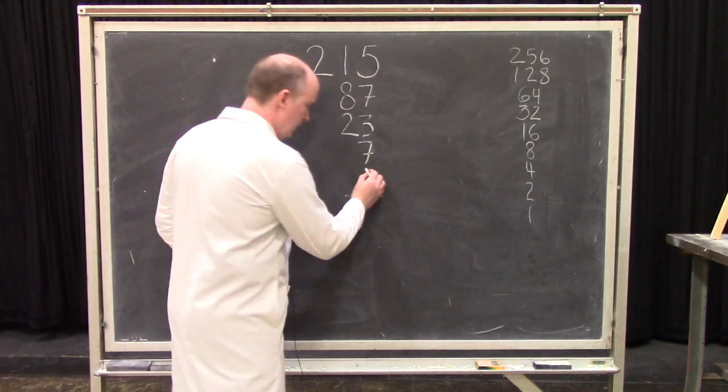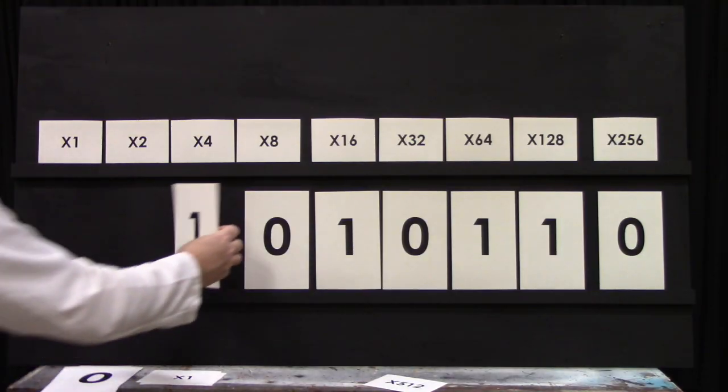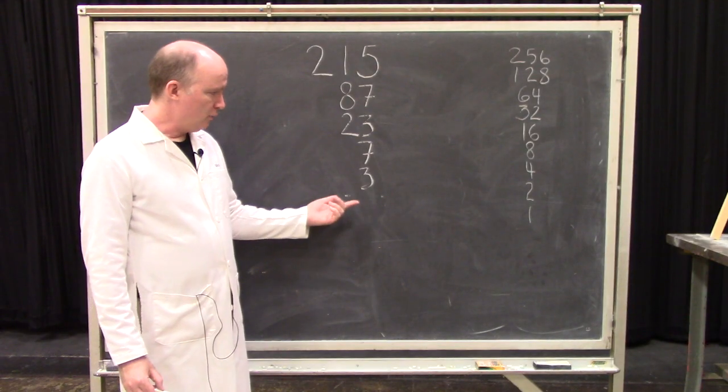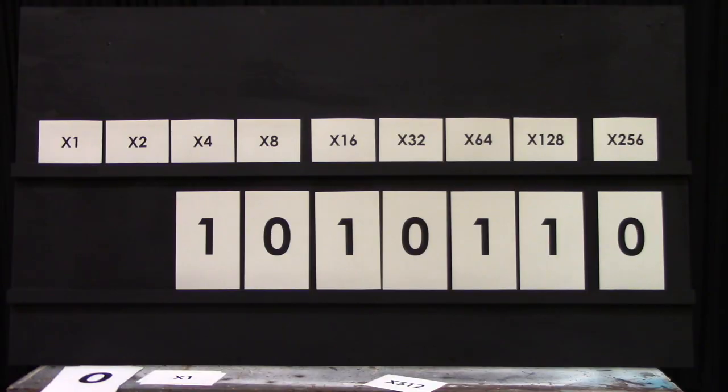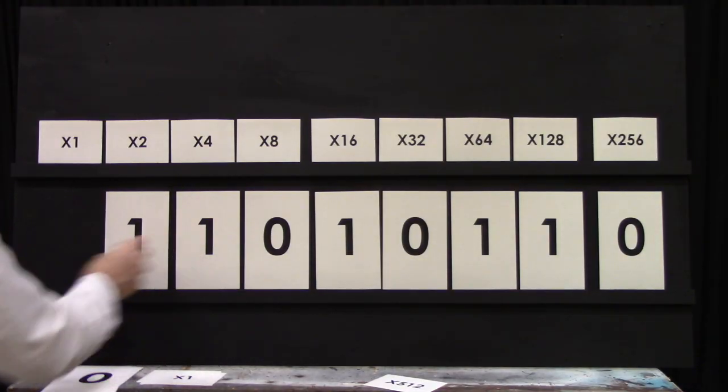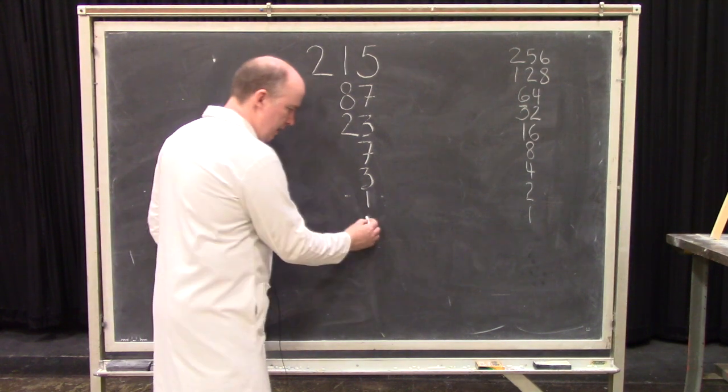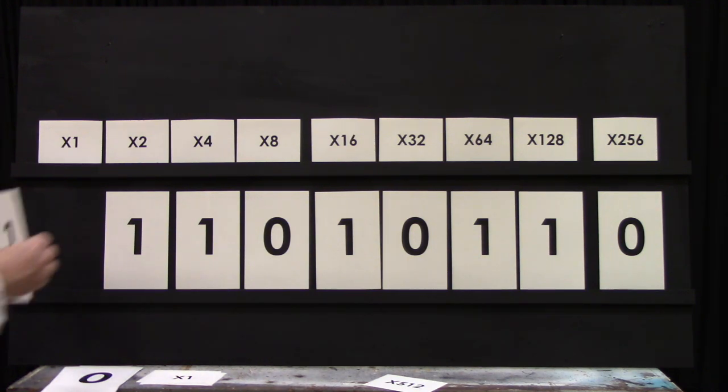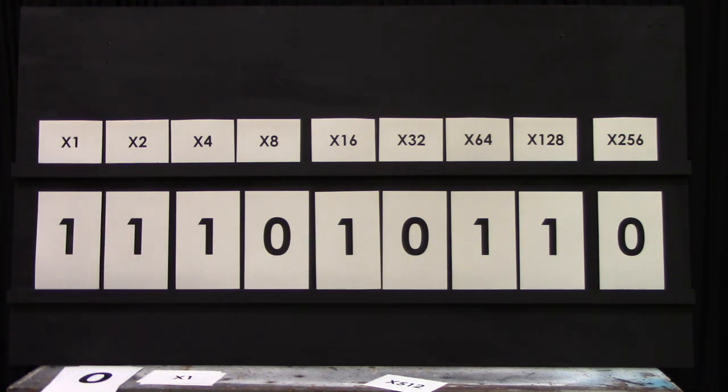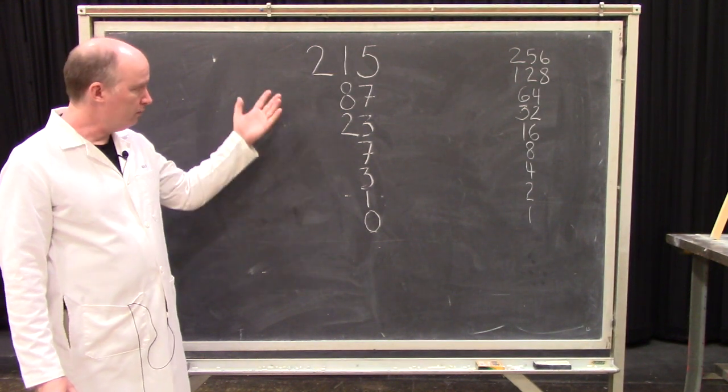4 is smaller than 7, so we subtract 4 leaving us with 3, and we put a 1 in the 4s place. And we can subtract 2, which leaves us with 1, so we put a 1 in the 2s place. 1 equals 1, so we put a 1 in the 1s place. And now we are at zero.